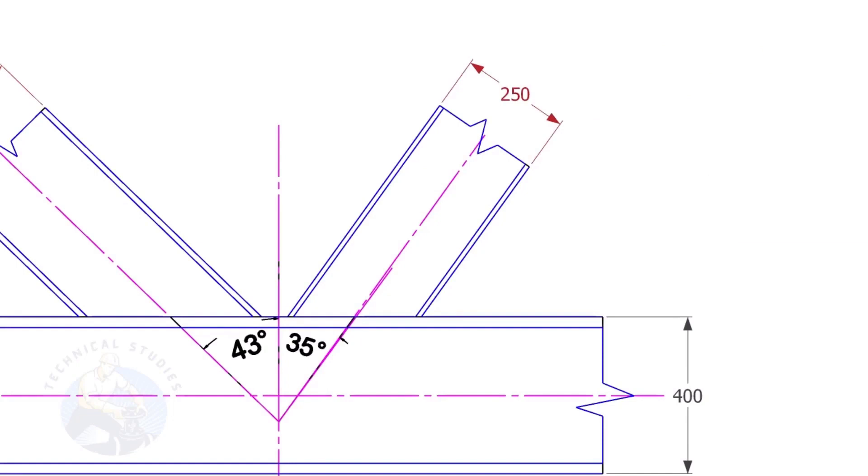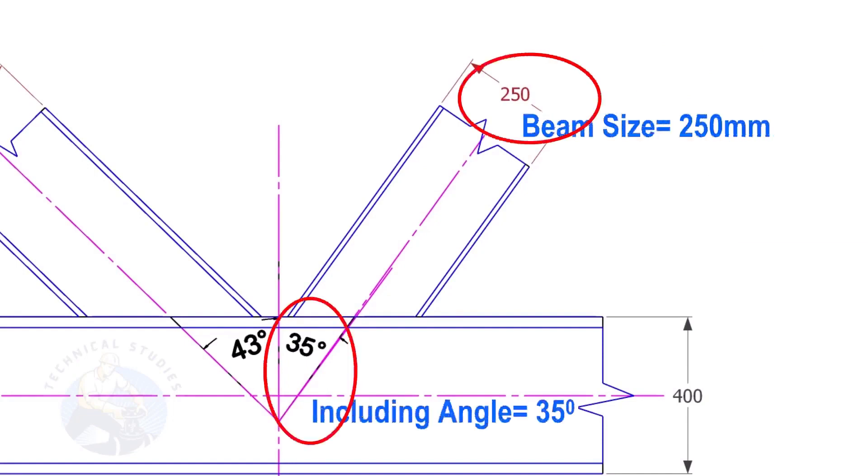Here, the size of the beam is 250 and the including angle is 35. Let us calculate the cutback.